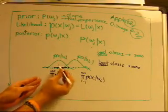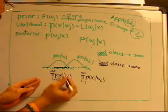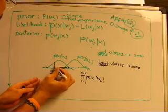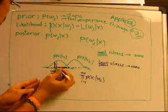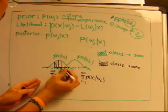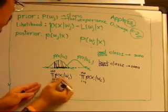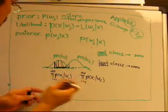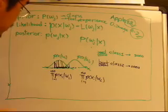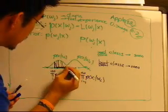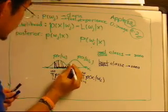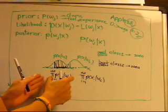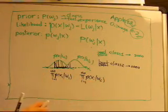Then you can compare — the product of p of x given omega 1. So this term is just the height on this curve at each data point. And for class 2, the same thing — you can compute the same product. Basically, you can compare the value of this term and this term.